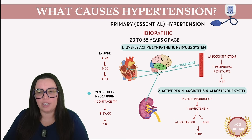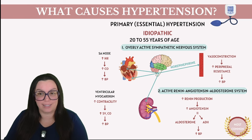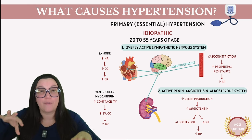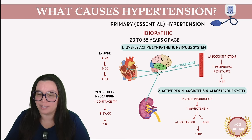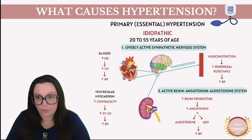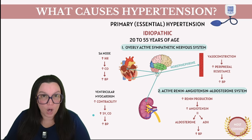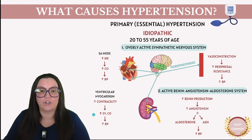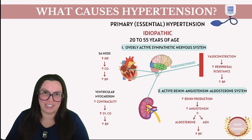Additionally, the sympathetic nervous system acts on the ventricular myocardium — the heart's contractile cells — enhancing contractility, or the force of contraction. With more force, we're going to see an increase in stroke volume as well as cardiac output, thus leading to an increase in blood pressure.